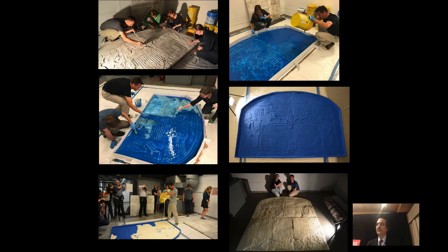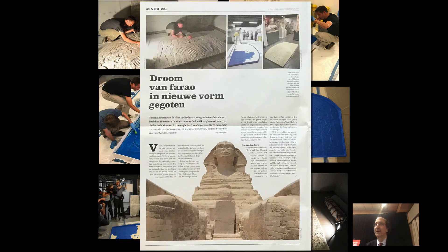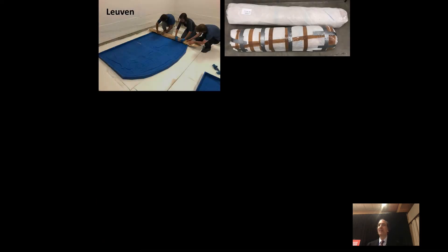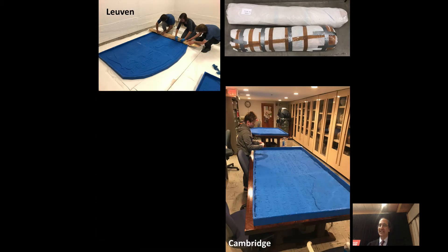The next step was pouring the resin into the mold, and finally we get the finished product. A final copy was left in Leuven — they're going to put it back on view. They got a lot of great press, so if you want to work on your Dutch, look at the university papers from last summer. The next step was to roll the thing up mummification-style and try to get it back to Cambridge somehow — more or less in one piece, a couple of rips and tears, but you see the two pieces in the Semitic Museum stores.